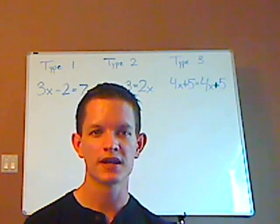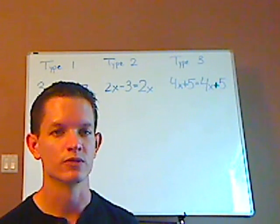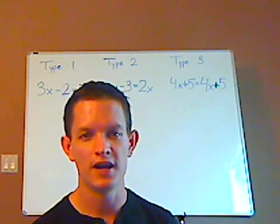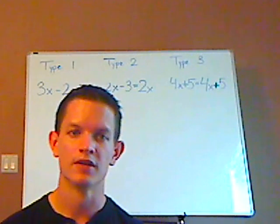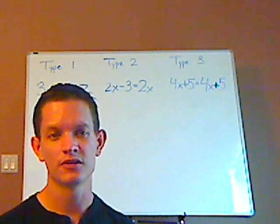First one is three x minus two equals seven. The second type is two x minus three equals two x, and then you have, for type three, four x plus five equals four x plus five. So if you would, pause the video and try to do these ones on your own. Let's see what you get.